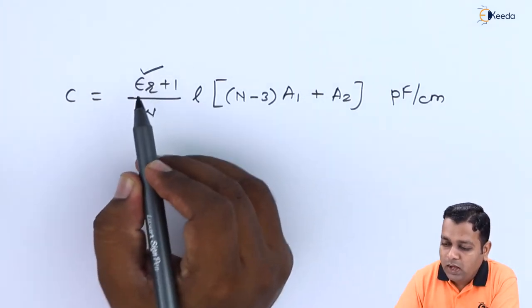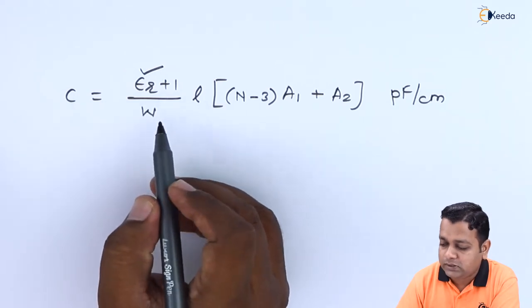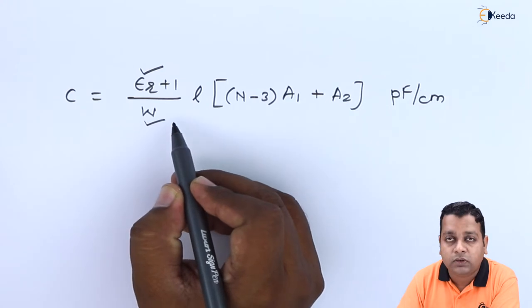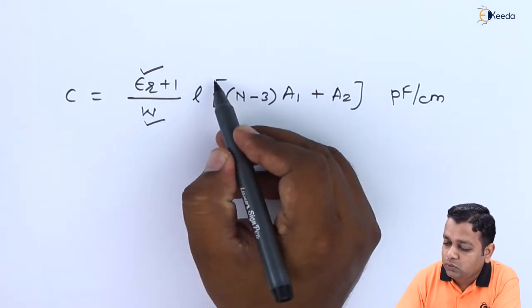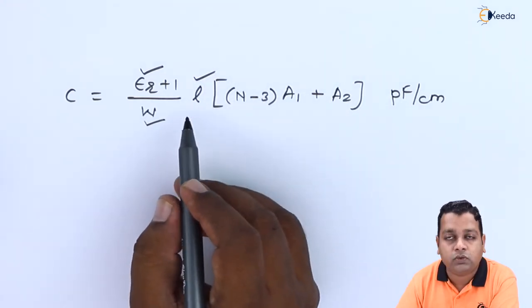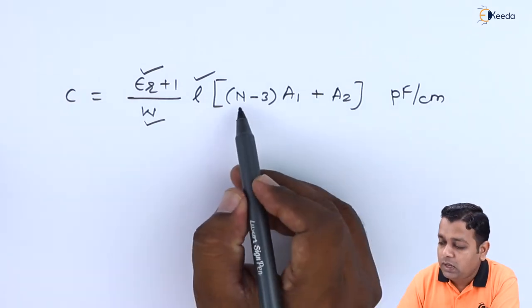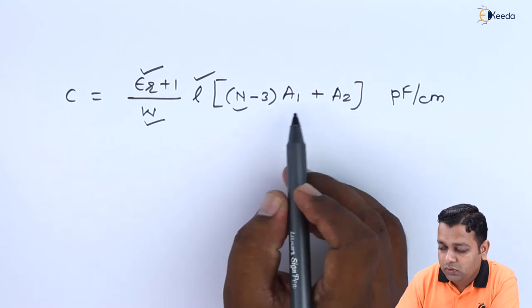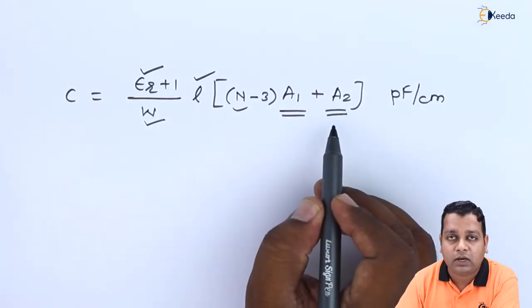So let us check whether we have all the values to be substituted here or not. We have been provided the value of epsilon r. Yes it is there. We have been provided the value of finger base width. W is also there. L is also holding the value 0.00254 centimeters. N the number of fingers is also there. It is equal to 8. We don't have the values of A1 and A2.